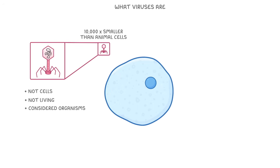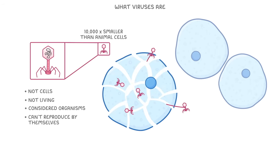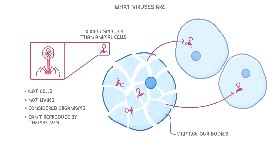They're about 10,000 times smaller than animal cells, and they can't reproduce by themselves. However, once they get inside another organism's cell, they can use that cell's own machinery to make loads of copies of themselves. And then when the time is right, they can burst the cell. All of those new viruses will have to find new cells to take over. This process of colonising and then bursting our cells is obviously going to damage our bodies, and that's one of the main reasons that viruses make us feel ill.